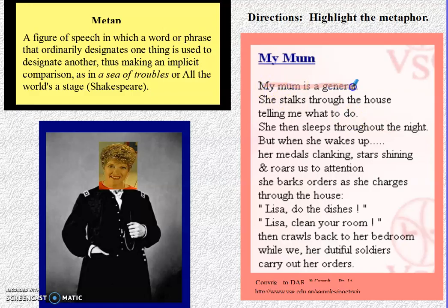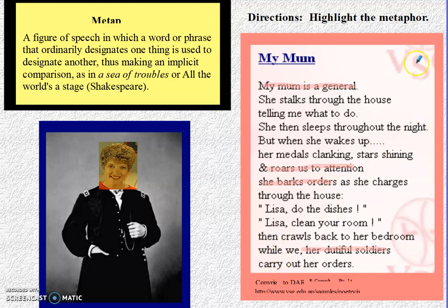I tried my best British accent because this is a British poem. They're comparing the mom to a general — she's not really a general, but they make her seem like it because of the orders she gives. They're also comparing her to a dog barking, or a lion roaring us to attention. And the children are her 'dutiful soldiers,' so the whole poem is a metaphor comparing the mom to a general.